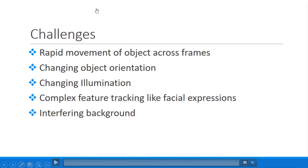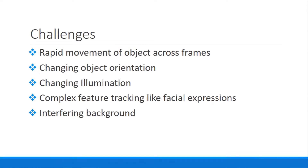It is always important to know the challenges involved while designing a particular algorithm. Some important challenges in designing a motion tracking algorithm include the rapid movement of an object across frames, changes in object orientation across frames, inconsistent illumination through all frames, tracking complex features like facial expressions, and tracking an object in a background that interferes with what is being tracked.